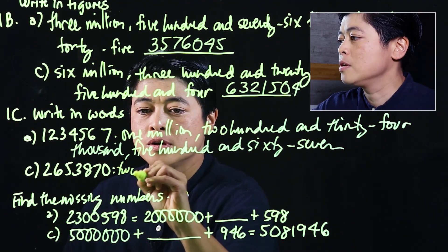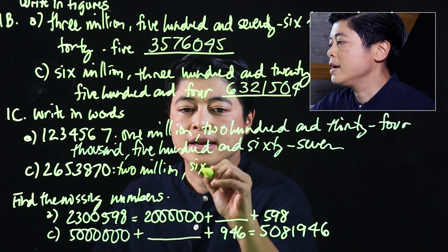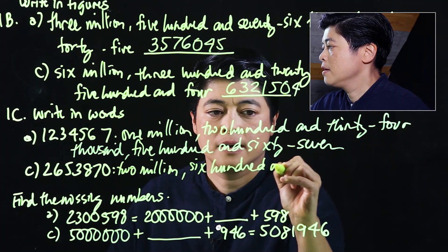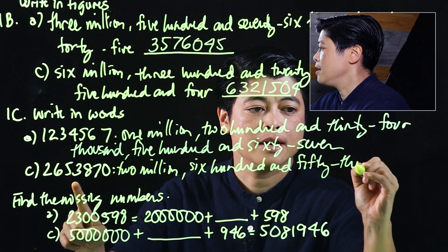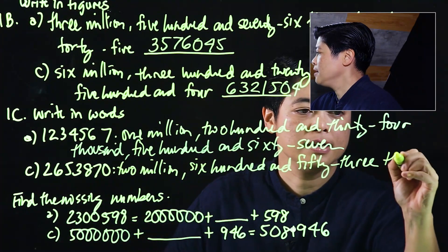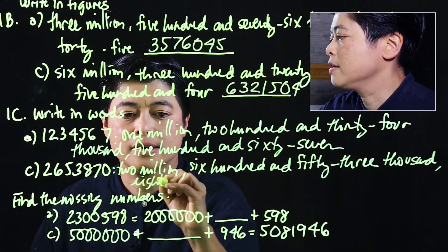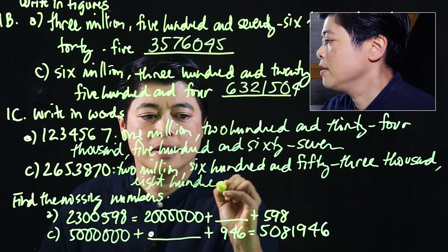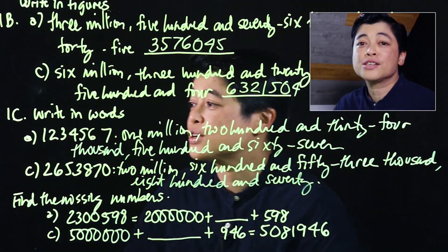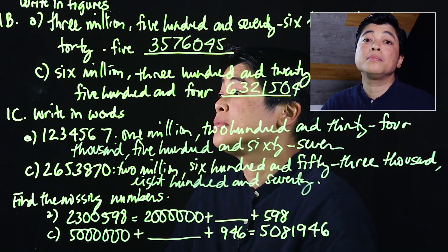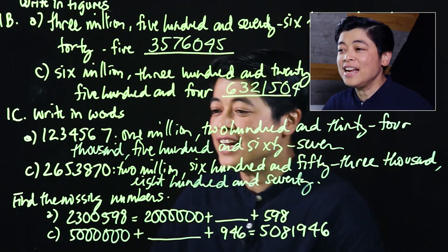Another example is two million, six hundred and three thousand, eight hundred and seventy. We read and write each group separated by commas consistently — two million, six hundred and three thousand, eight hundred and seventy. Doing the problems in a consistent manner makes it straightforward.